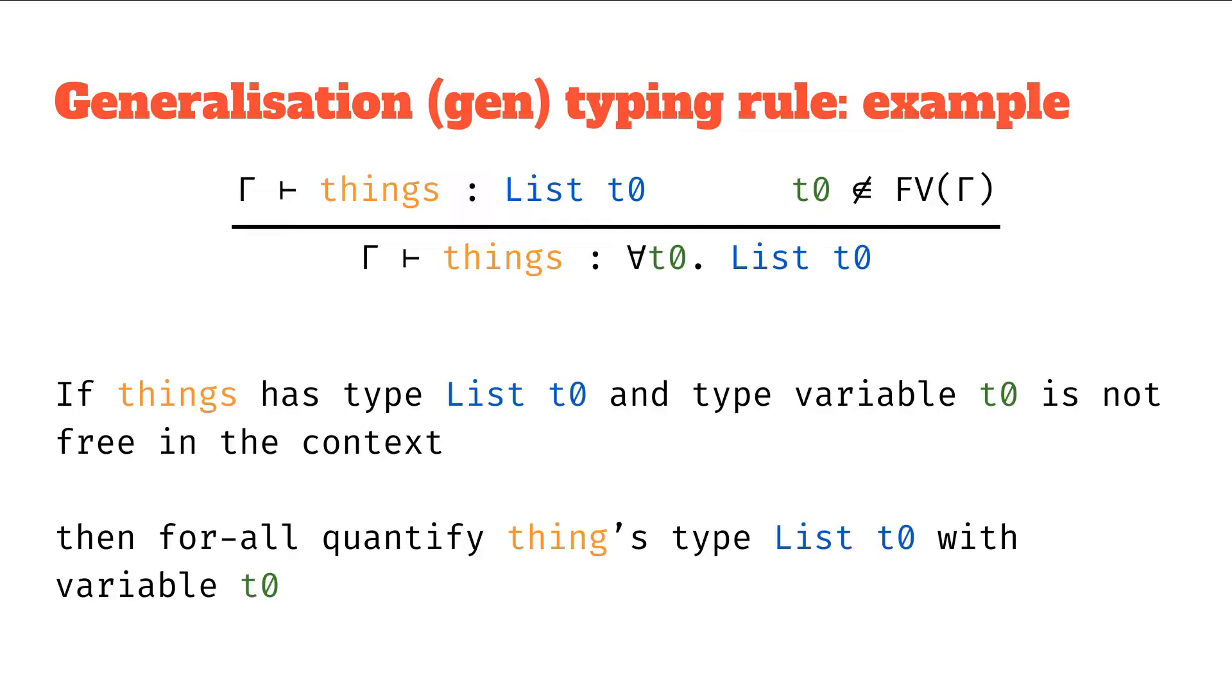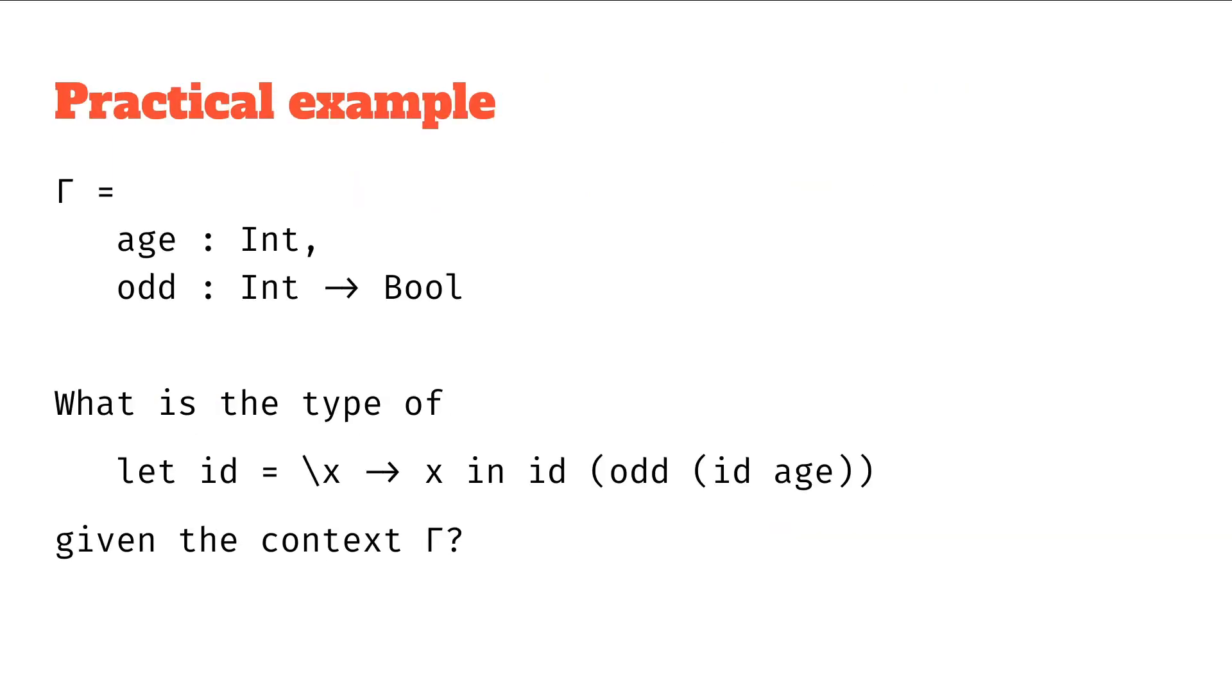Continuing on, let's take a look at a practical example. We have a context gamma with our favorites, our assignments, age has type int and odd has type int to bool. And we're asking the question, what is the type of let id equals backslash x to x in id of odd id age, given the context capital gamma.